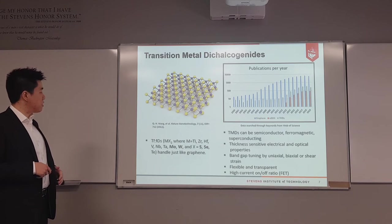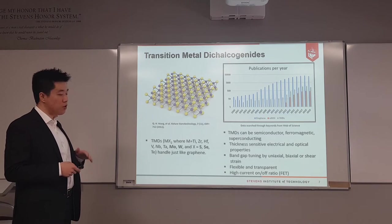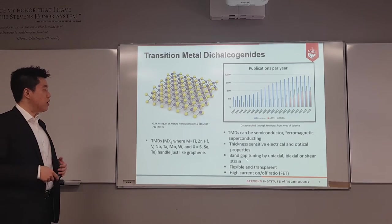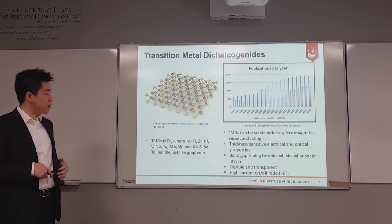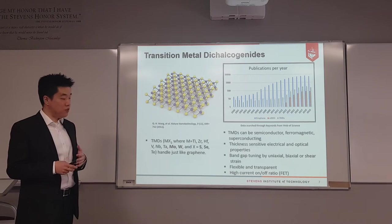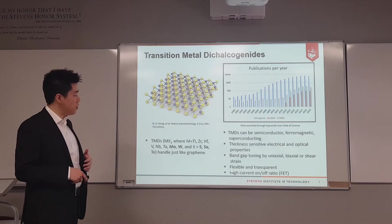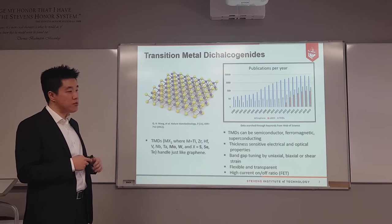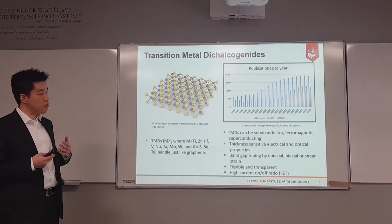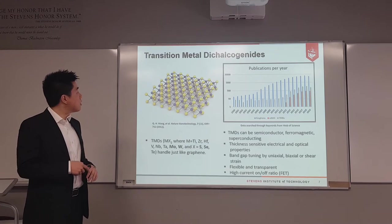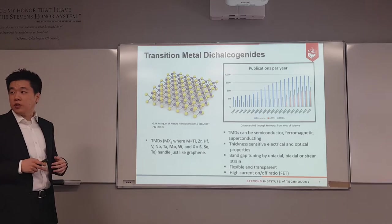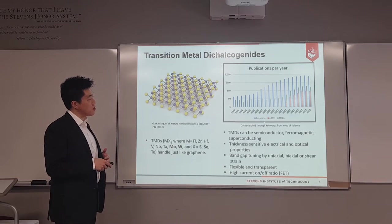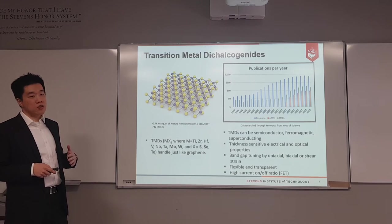Transition metal dichalcogenides contain one layer of transition metal and two layers of chalcogen atoms forming a sandwich structure. This material can be semiconducting, ferromagnetic, or superconducting depending on growth phase. It has significantly sensitive electrical and optical properties. Its band gap can be tuned by doping or strain effects. Similar to graphene, it is flexible and transparent. When fabricating field effect transistors using TMDs, it shows very high on/off ratio. Since the first demonstration of direct band gap in monolayer TMDs in 2010, publications have exceeded 1,000 per year.